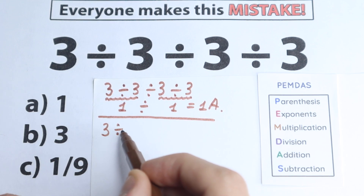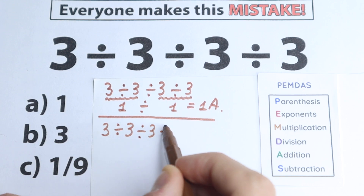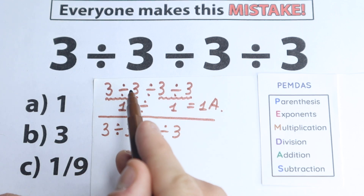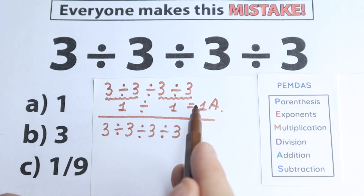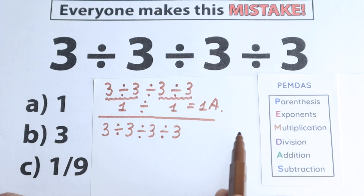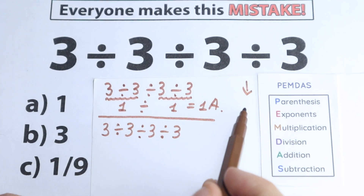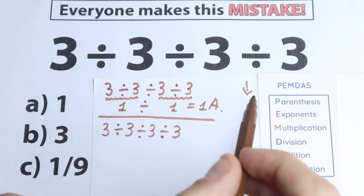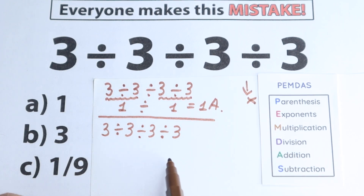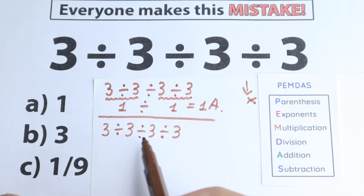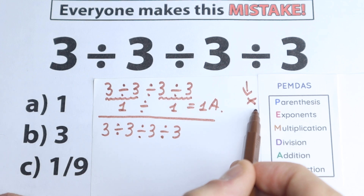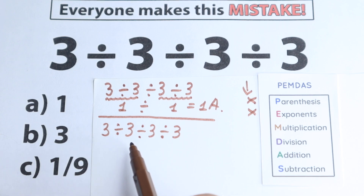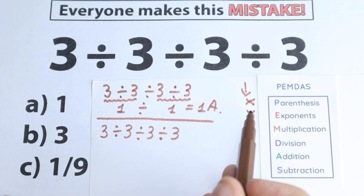Here is our question: 3 divided by 3, divided by 3, divided by 3. According to PEMDAS, we work from the top to the bottom. First step: parentheses — but in our question we don't have parentheses, so we skip this step. Next step: exponents — squares, cubes, fifth power, tenth power — I don't see any of those, so we skip this step as well.